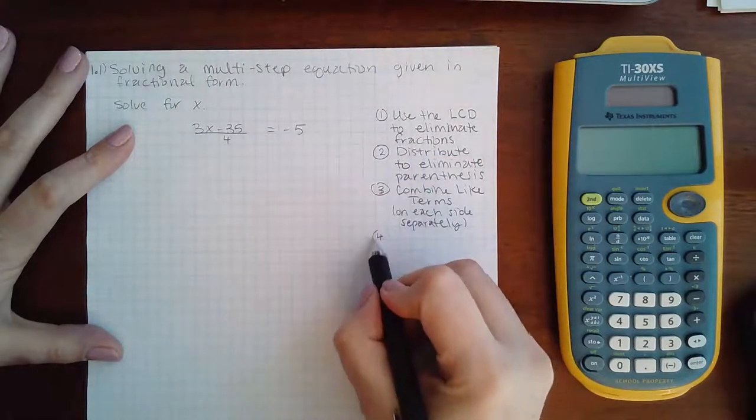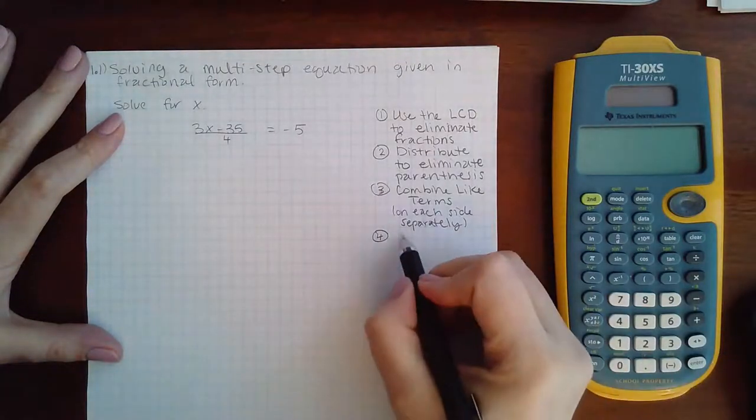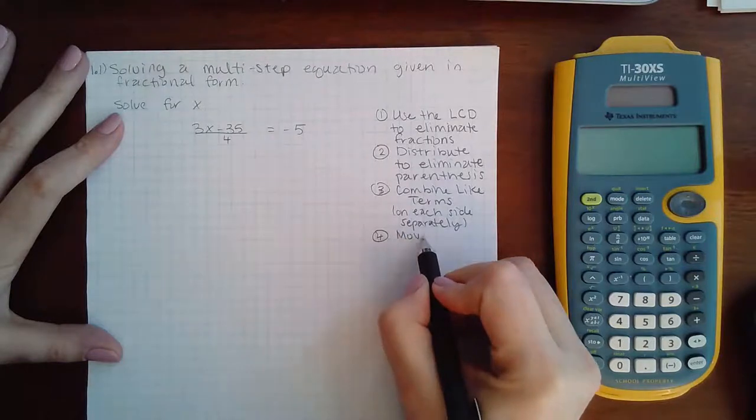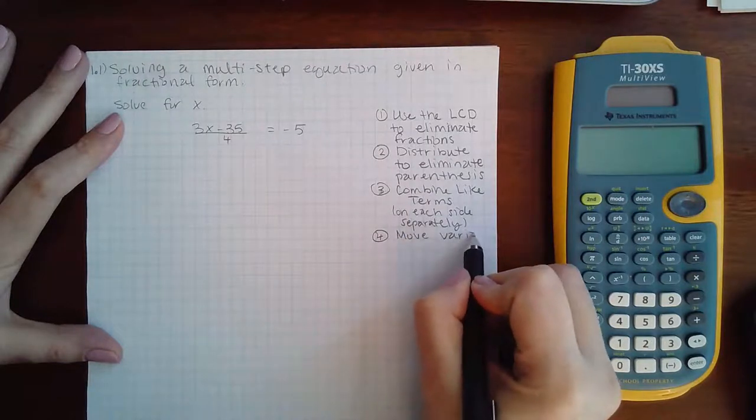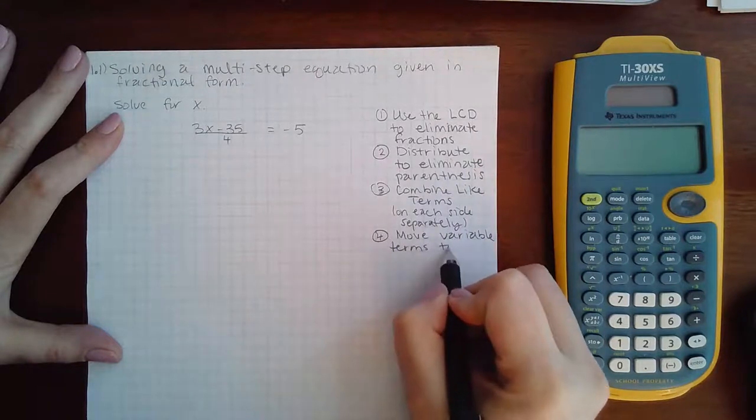Then once you have your one expression on the left and your one expression on the right, you're going to move variable terms to one side.